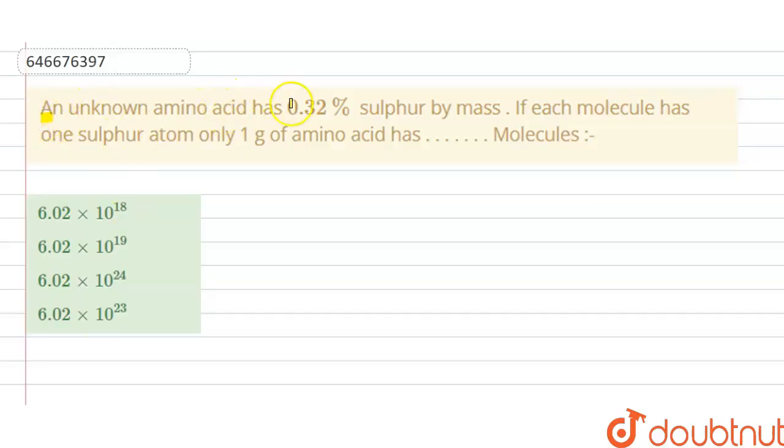An unknown amino acid has 0.32 percent sulfur by mass. If each molecule has one sulfur atom only, one gram of amino acid has... So we have to find the molecules. Options A, B, C, D are given here, so we have to choose the correct option.